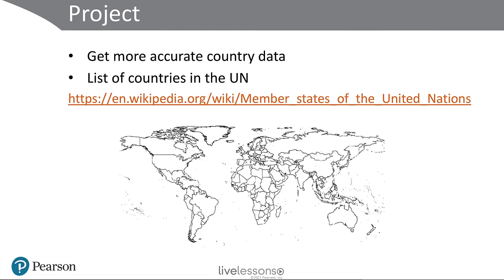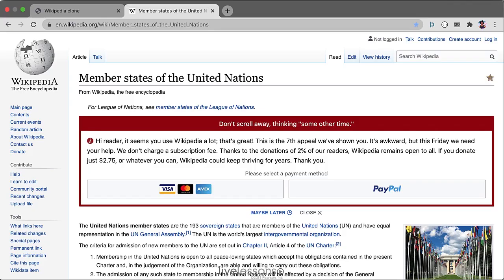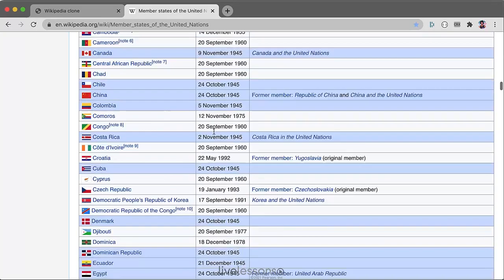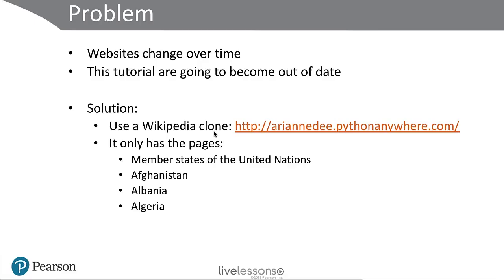While we're at it, we might also want to get some accurate country data. In the latter part of the class, we're going to also get the population and area for different countries. We're going to be using this page — it looks like this — and here is the table for the UN member states that we're going to scrape.